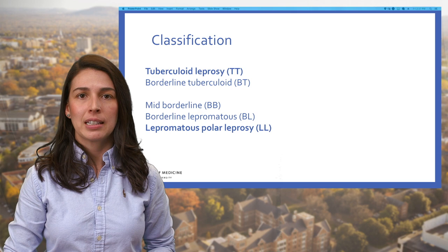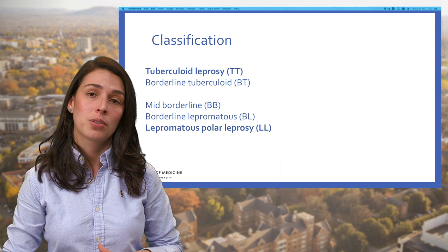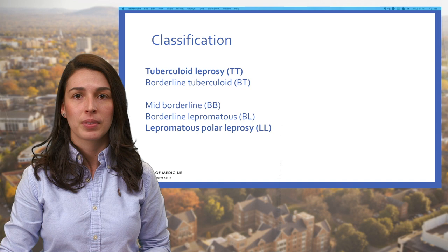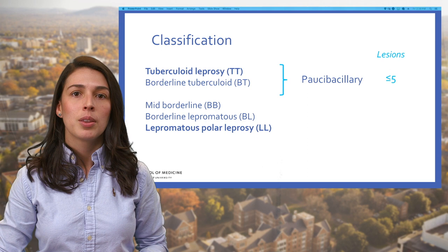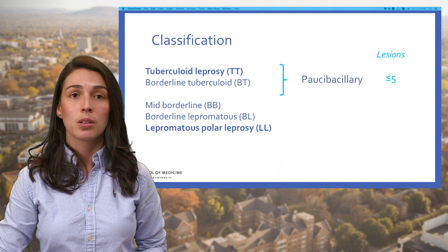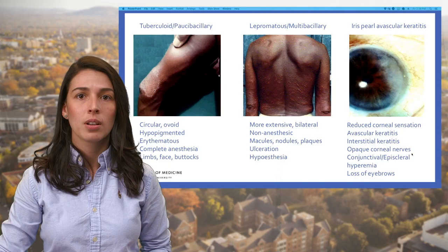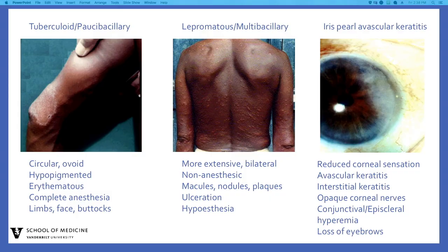The classification of leprosy is based on three criteria: clinical, histopathological, and immunological. These criteria identify five forms of leprosy: tuberculoid leprosy, borderline tuberculoid, mid-borderline, borderline lepromatous, and lepromatous leprosy. For therapeutic purposes, patients are divided into two groups: paucibacillary — which includes tuberculoid and borderline tuberculoid leprosy with fewer than five lesions — and multibacillary, which includes mid-borderline leprosy and lepromatous polar leprosy.